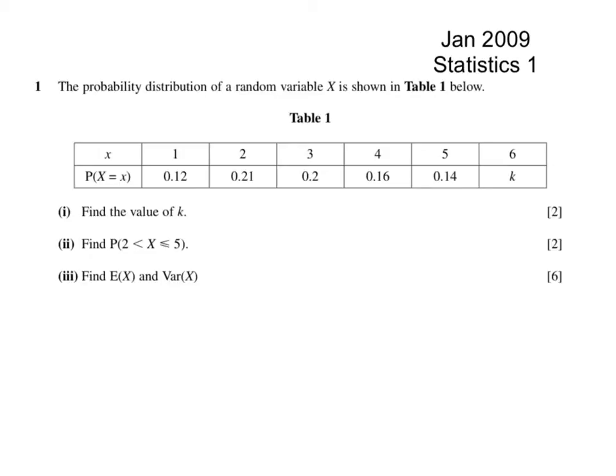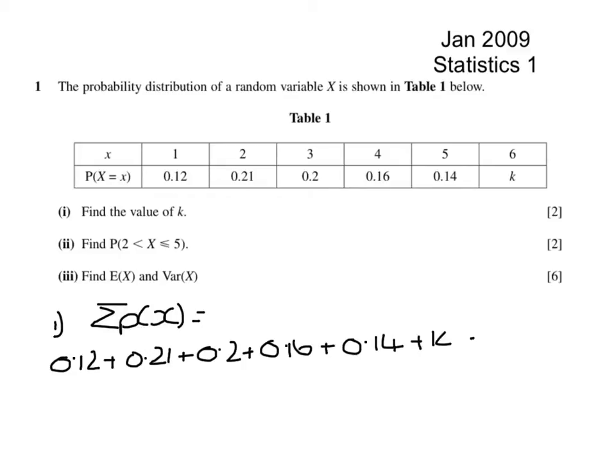January 2009, S1, question 1. It's a discrete random variable question. To find the value of k, we're going to use the fact that all probabilities add to give 1. So that tells me that 0.12 plus 0.21 plus 0.2 plus 0.16 plus 0.14 plus k has to be 1.